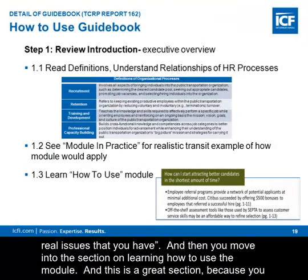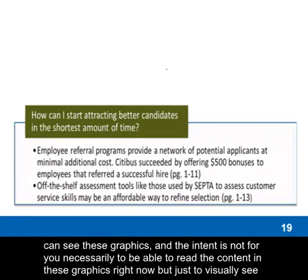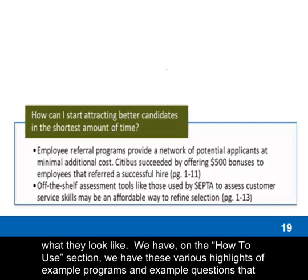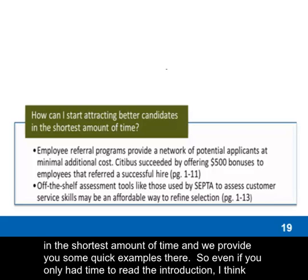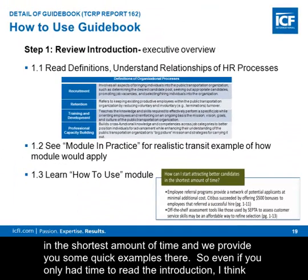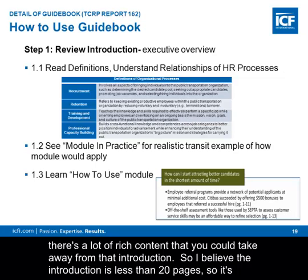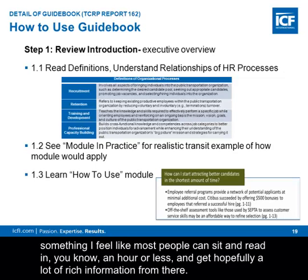Then you move into the section on learning how to use the module. You can see graphics — the intent is not necessarily for you to read the content in these graphics right now, but just to visually see what they look like. In the how-to-use section we have highlights of example programs and example questions, such as: how do I start attracting better candidates in the shortest amount of time? We provide quick examples there. Even if you only had time to read the introduction, there's a lot of rich content. The introduction is less than 20 pages — something most people can read in under an hour.